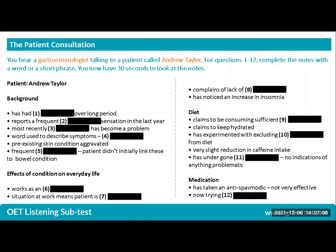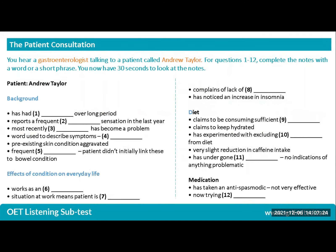There will be 12 pieces of information that have been taken out of the notes. You will listen to the recording to find the information needed to fill in each gap. The notes are set out in bullet points under different headings, which help guide you through the different stages of the consultation.